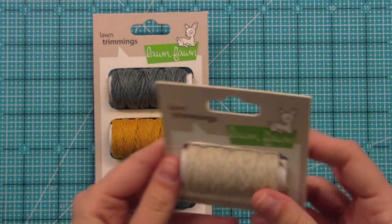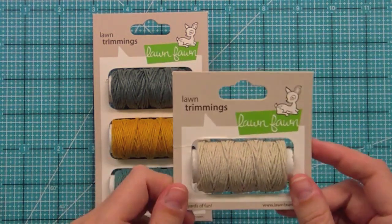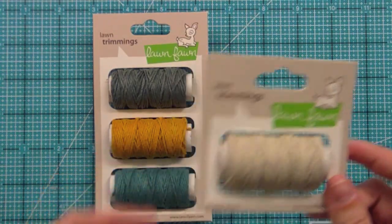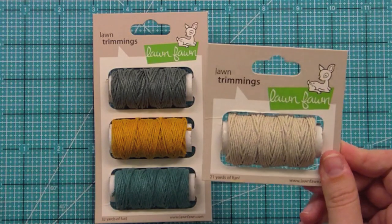And then we have this really great natural colored trimmings cord. This stuff is wonderful because it matches everything and you can actually dye it with mist or ink or markers, all sorts of things, which we'll do in a bit.